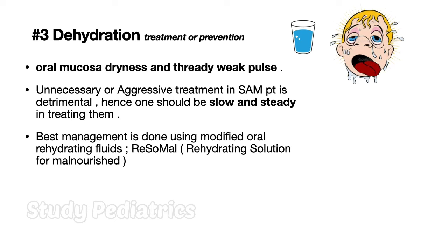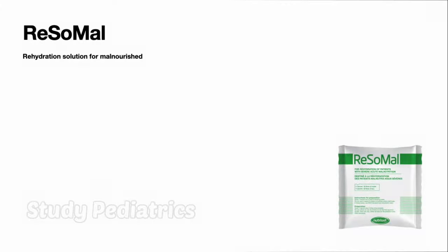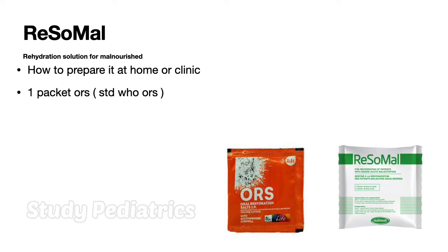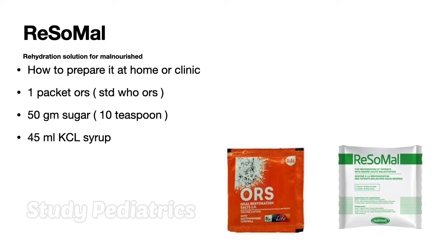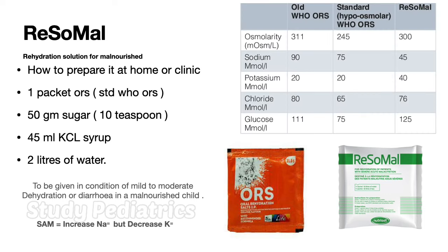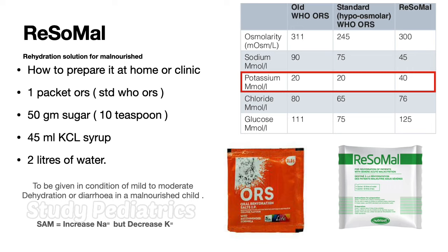The best management for dehydration uses modified oral rehydrating fluid. The term used is ReSoMal — rehydrating solution for malnourished, also called MORS. To prepare it at home: take one packet of standard WHO ORS, add 50 grams of sugar (10 teaspoons), 45 ml of KCl syrup, and 2 liters of water, then mix. This solution is given in mild to moderate dehydration or diarrhea in a malnourished child. Key concept: SAM is a condition of increased sodium and decreased potassium — so the concentration of potassium is doubled and sodium is halved.